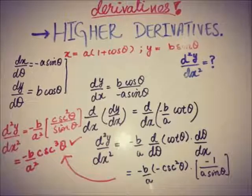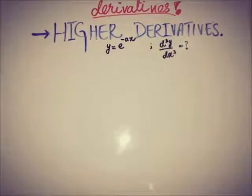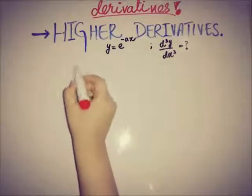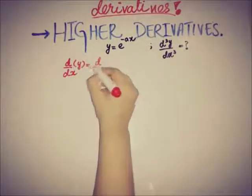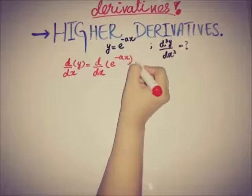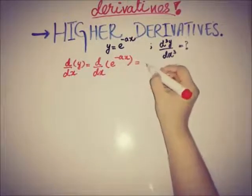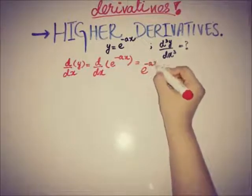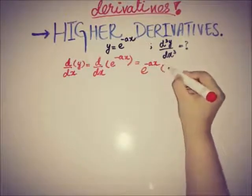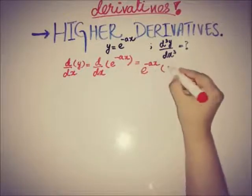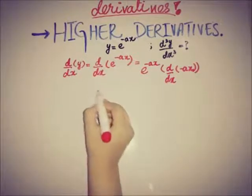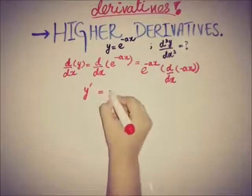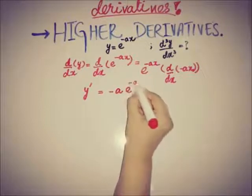Now let's see another example. The function is y = e^(−ax) and we have to find the third derivative. Finding the first derivative: d/dx of e^(−ax). Because this is an exponential function with base e, it equals e^(−ax) multiplied by the derivative of the exponent −ax. Since a is a constant, the first derivative is −a e^(−ax).